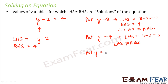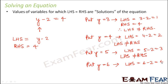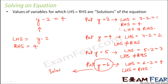Let's try with another value. If we put y equal to 5, the left hand side becomes 5 minus 2, which is 3, but the right hand side is 4, so left hand side is not equal to right hand side. Now let's try y equal to 6. This time, LHS becomes 6 minus 2, which is 4, and the right hand side is also 4. So LHS is equal to RHS, meaning y equal to 6 is a solution for this equation.